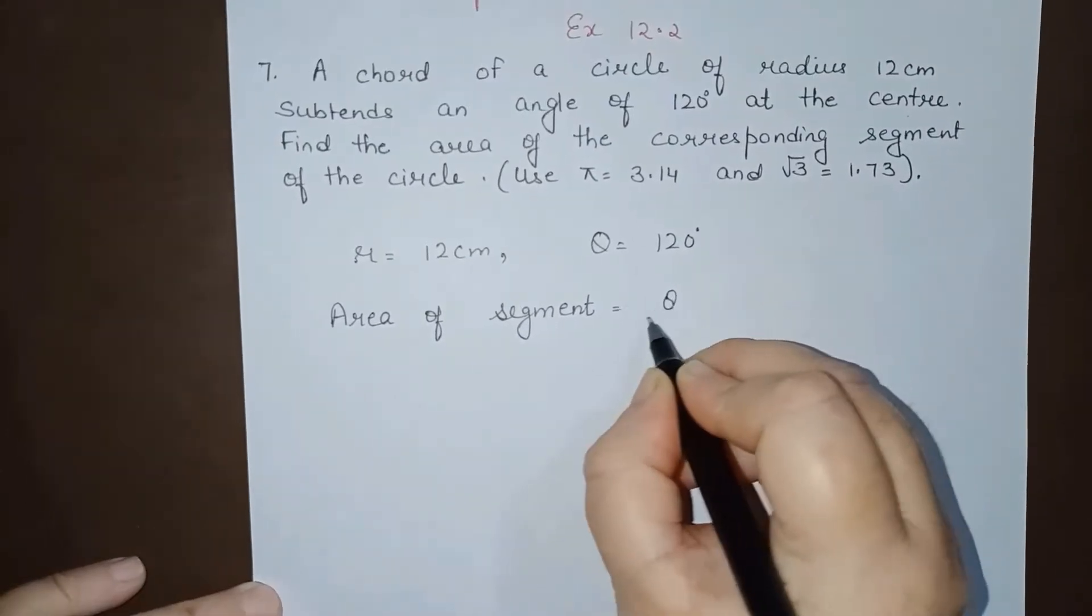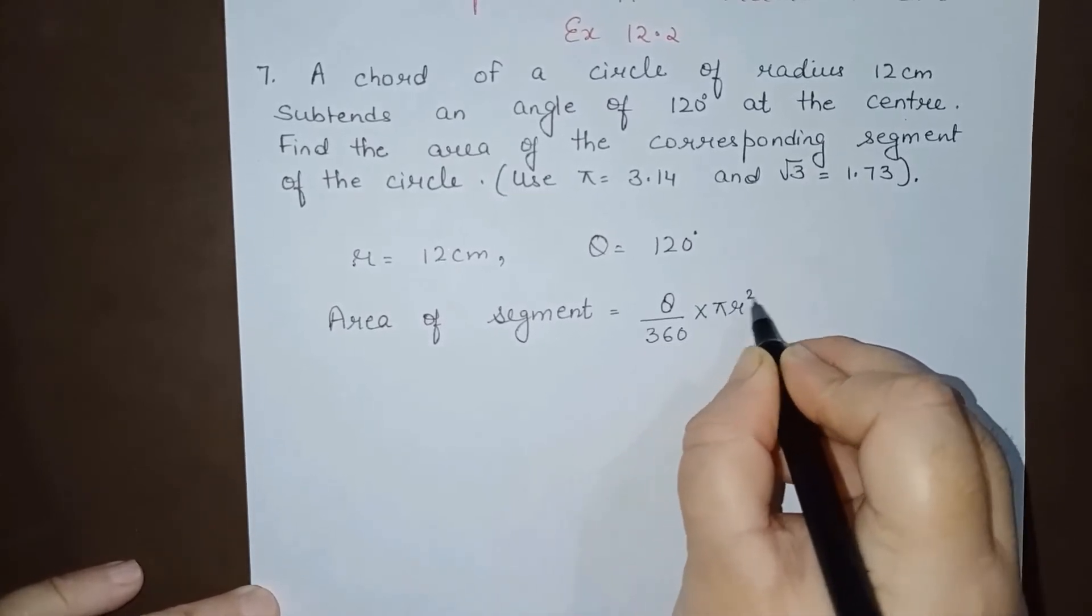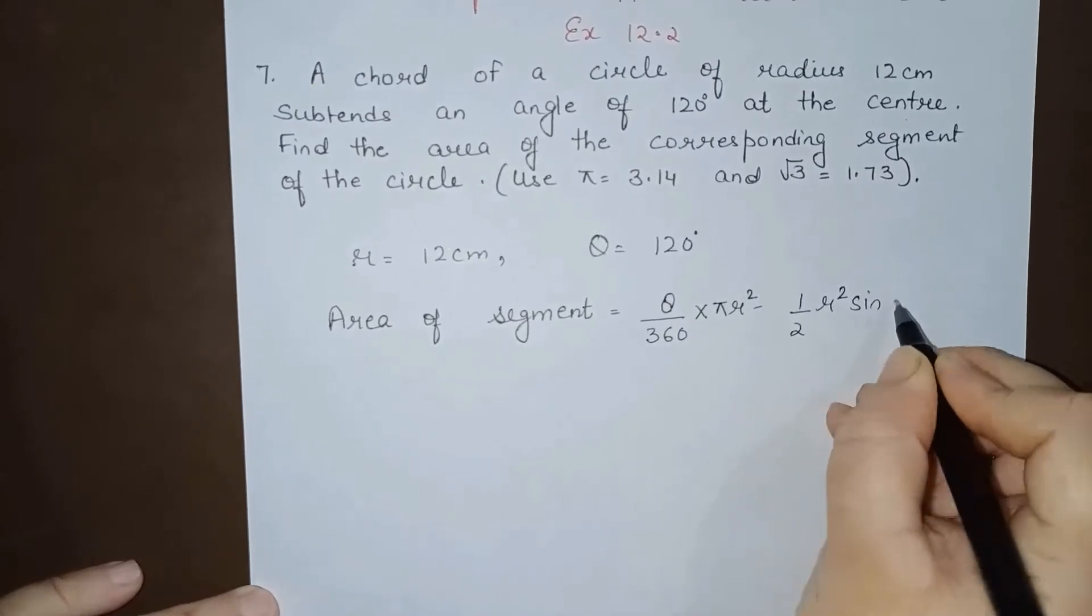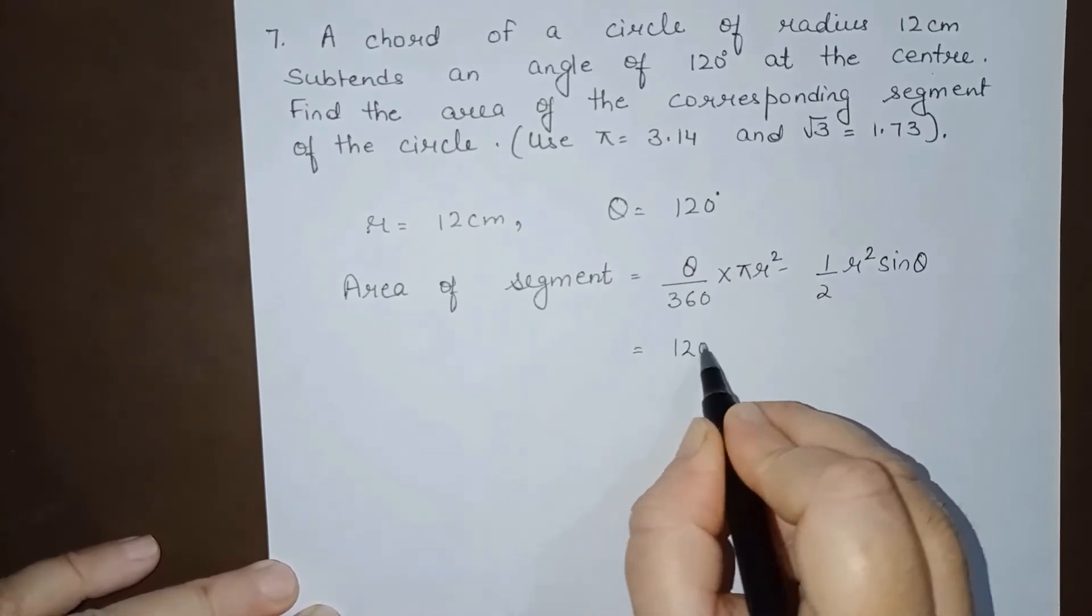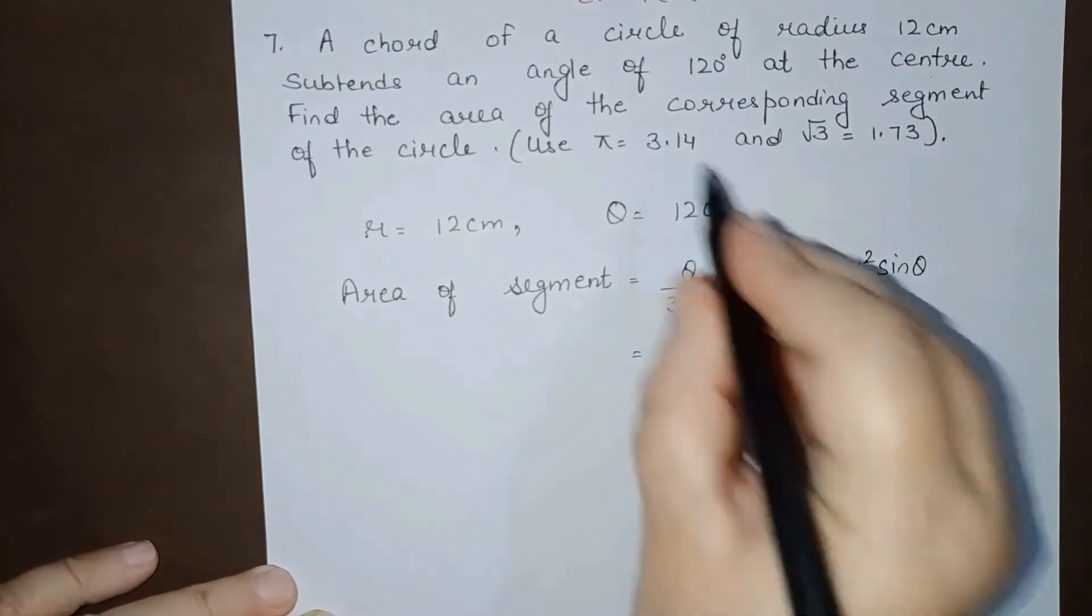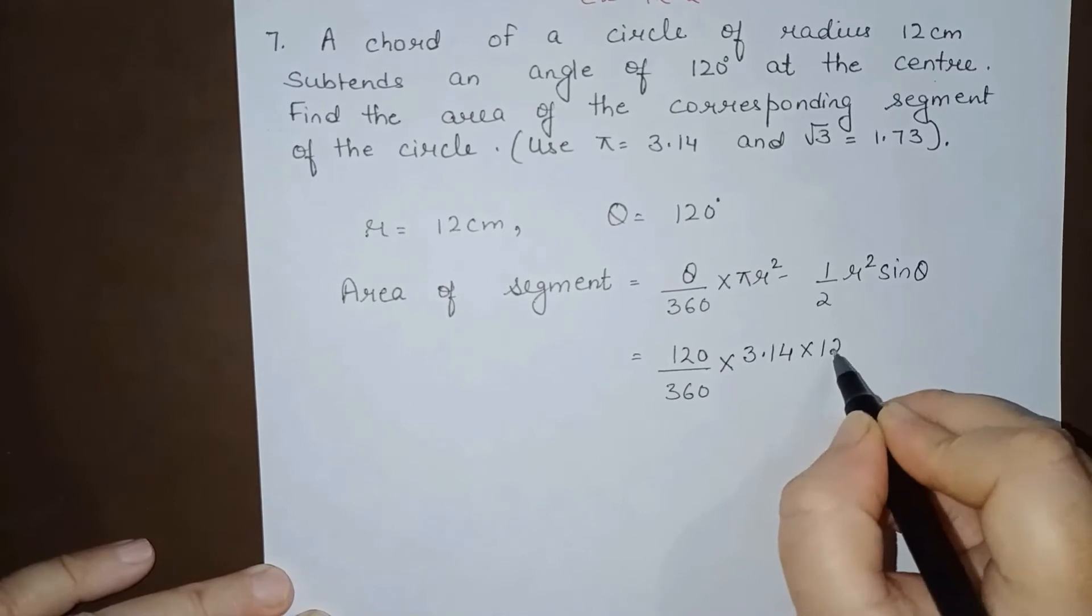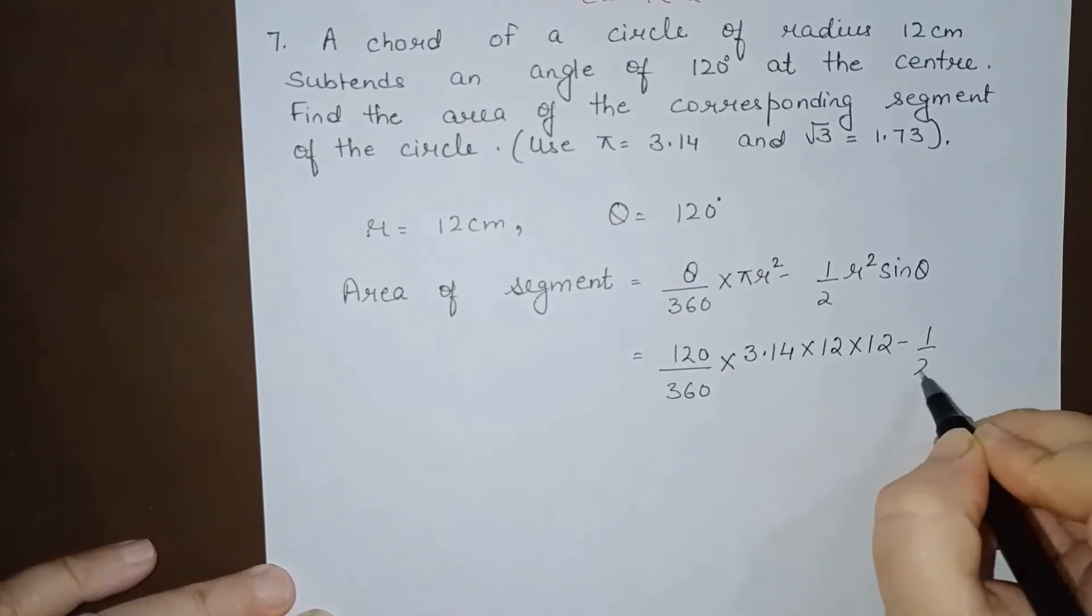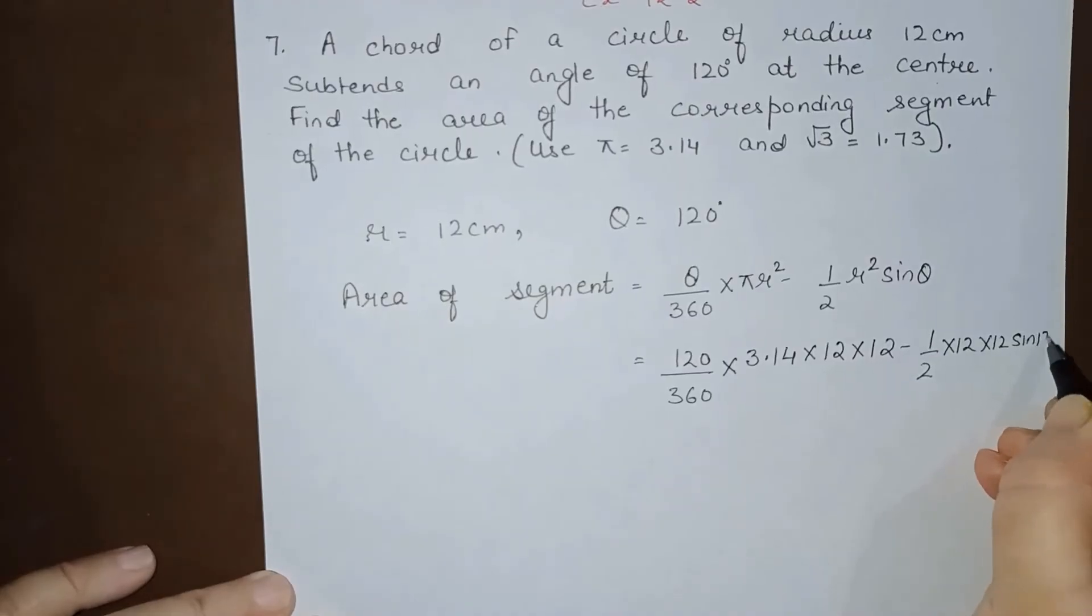Area of sector is given by θ/360 × πr² - ½r²sin(θ). Now here we have 120/360. For π we will use 3.14, r is 12, so we get 120/360 × 3.14 × 12² - ½ × 12² × sin(120°).